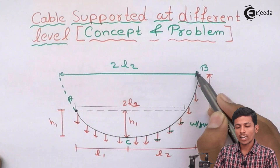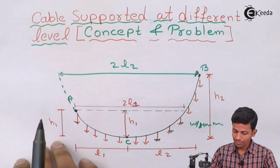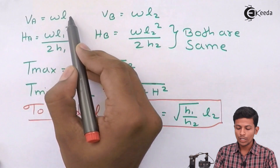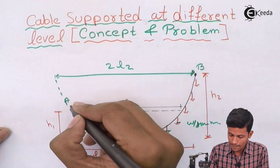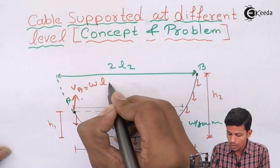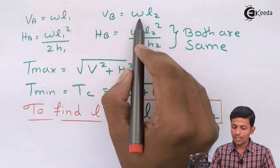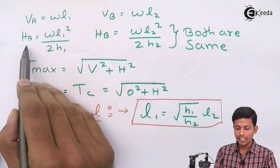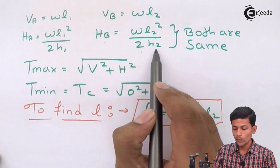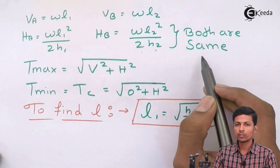In this type, we directly apply formulas to find VA and VB. To find VA, simply apply the formula W into L1. To find VB, it is W into L2. To find HA, the formula is W into L1 squared upon 2 into H1. And HB will be W into L2 squared upon 2 into H2. As you all know, the H value is always the same in cables as well as in arches.